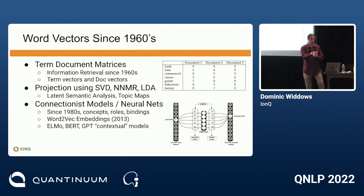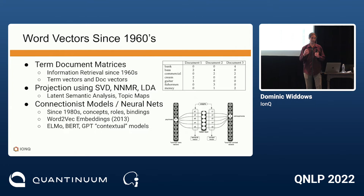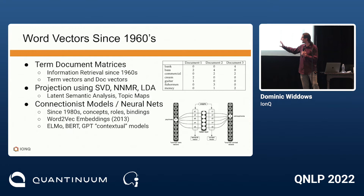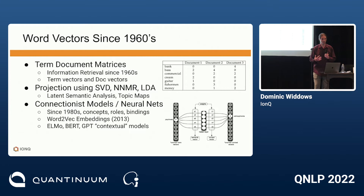Paul Smolensky's work on role-filler binding in the late 80s, using that for slot-filling and syntactic structures, is a great example — his group is still doing fantastic work today. And the neural net composition things we're using in BERT-style models are generally not taking syntax very seriously.